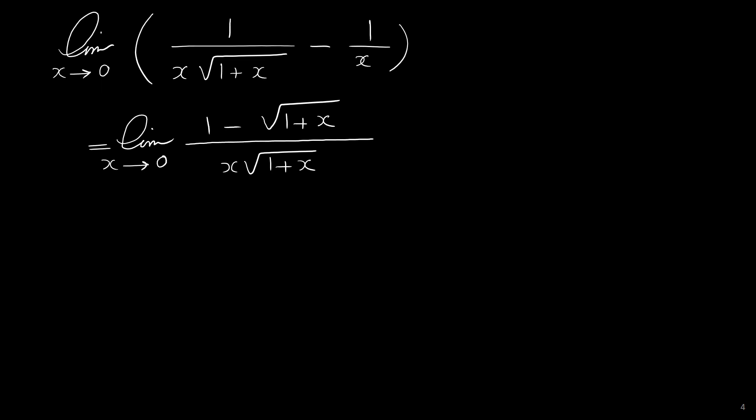Here we only use the conjugate method for the top. The conjugate means when you have two expressions like A and B with a minus or plus between them, the conjugate is A plus B. In this example, in the top, 1 is A and radical 1 plus x is B, with a minus between them — so we have two terms. But in the bottom we have only one expression x times radical 1 plus x, with multiplication between x and radical 1 plus x, not addition or subtraction. So multiplying top and bottom by a conjugate of the denominator has no meaning here.